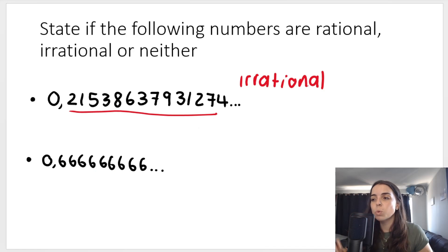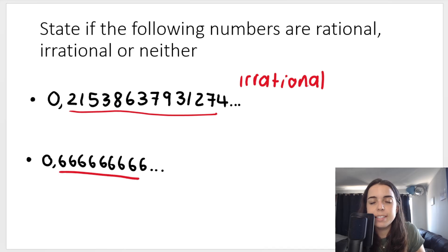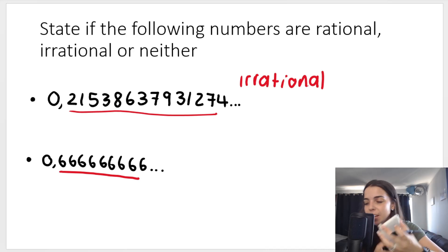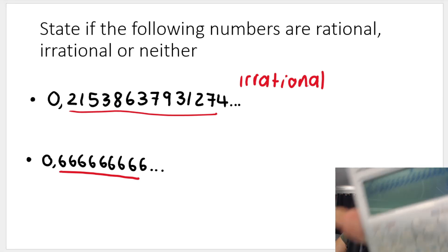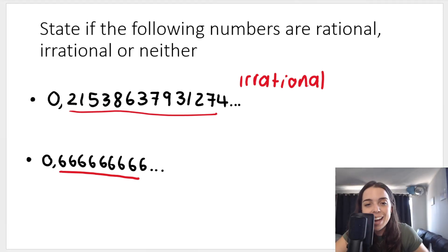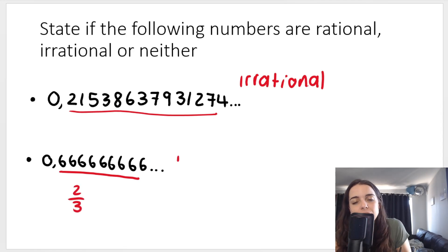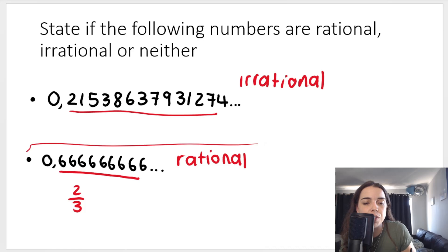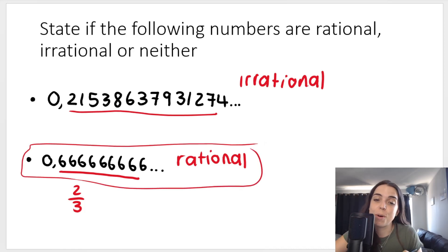What about this one at the bottom? It's also repeating, also going on and on, but it's got a repeating pattern: 0.6666666... If you take your calculator and type in enough sixes, your calculator will actually tell you that it is two over three. You can write this as a fraction — it's basically two over three — so this is a rational number. If you want to see the method to write this as a fraction, check out the link in my description box below.